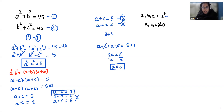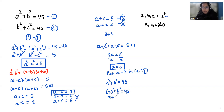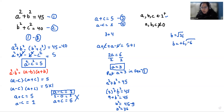Now we have the value of a equals 3. I am going to put it in equation number 1. So a squared plus b squared equals 45 becomes 3 squared plus b squared equals 45. So b squared equals 45 minus 9, which gives b squared equals 36, and b equals the square root of 36, so b equals plus 6 or minus 6. We reject the negative case because all values belong to positive integers, so the value of b is 6.